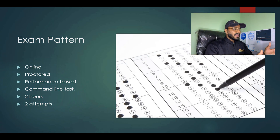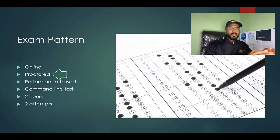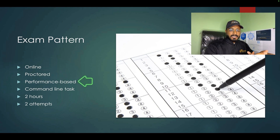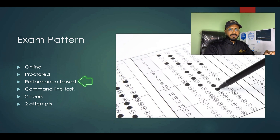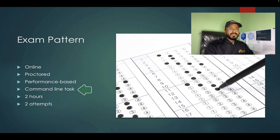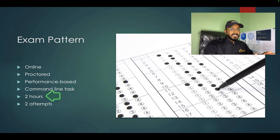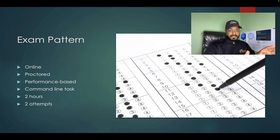Now let us discuss what the exam pattern looks like. It is an online exam and it is proctored, meaning somebody will be monitoring you for two hours — that is the duration of the exam. It is performance-based, meaning you will be given questions and if you solve 50% of them, you will receive that percentage of marks. It is a command-line task exam where you are given scenarios to implement. You need to solve 17 questions in two hours. You will get two attempts — if you fail the first attempt, you can claim a second attempt within a year of purchase.